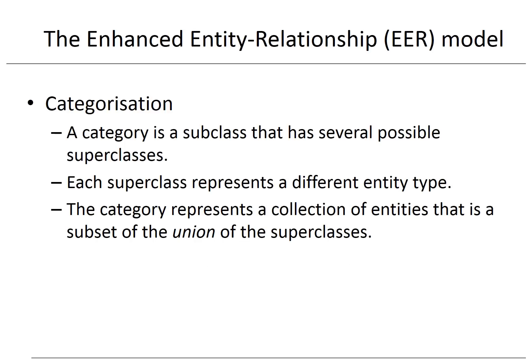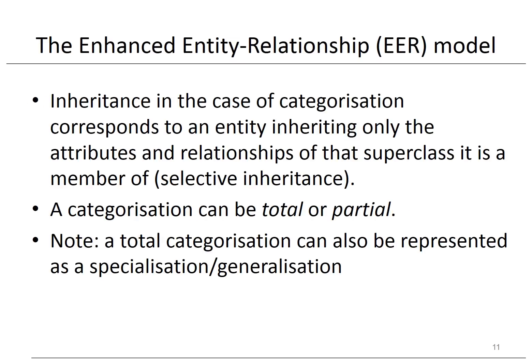Categorization is a second important modeling extension of the EER model. A category is a subclass that has several possible superclasses, where each superclass represents a different entity type. The category represents a collection of entities that is a subset of the union of the superclasses. Inheritance in categorization corresponds to an entity inheriting only the attributes and relationships of the superclass it is a member of — this is also referred to as selective inheritance. Similar to a specialization, a categorization can be total or partial. In a total categorization, all entities of the superclasses belong to the subclass. In a partial categorization, not all entities of the superclasses belong to the subclass. Note that a total categorization can also be represented as a specialization/generalization.